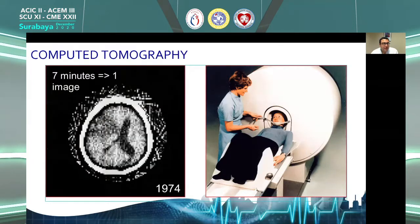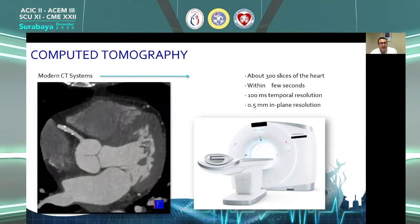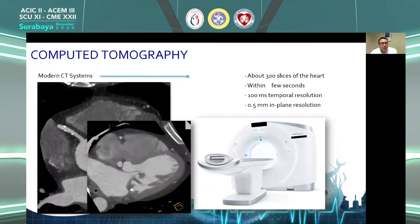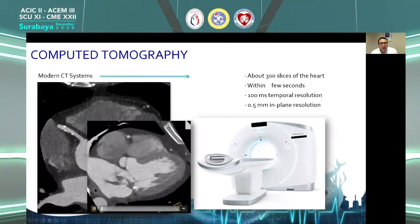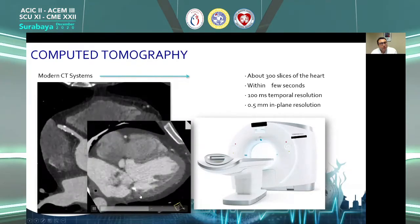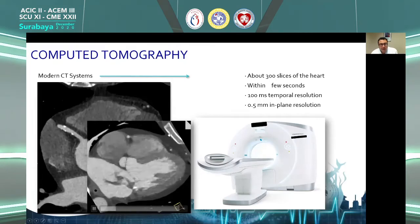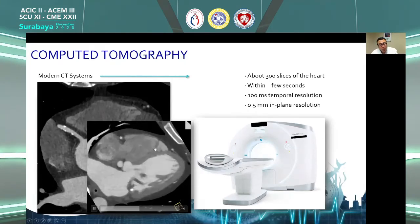Over 40 years ago, it took seven minutes to get one image of the brain. With modern CT systems acquiring about 300 slices of the heart simultaneously within a few seconds at very high spatial and temporal resolution, we get very high quality CT datasets. With special acquisition forms, we can also get functional information — as seen in this case with mitral valve endocarditis. While we primarily look at function with echo and MR, CT can also be used if adequately acquired.